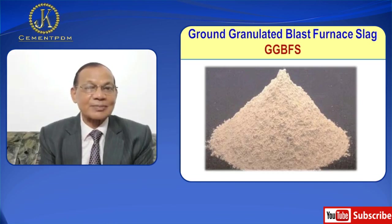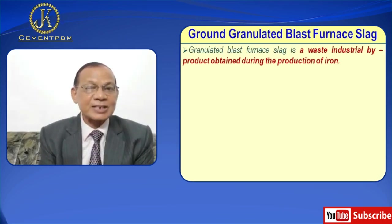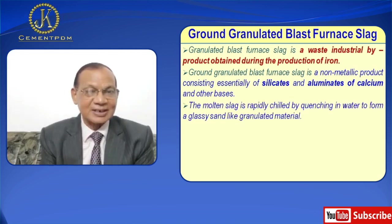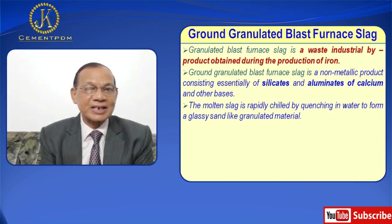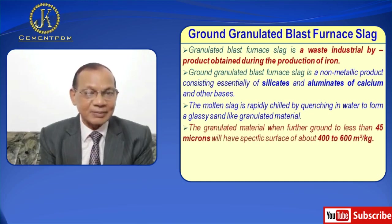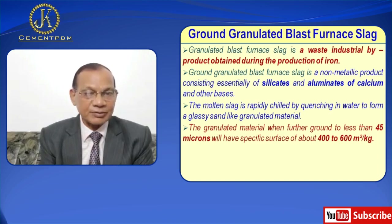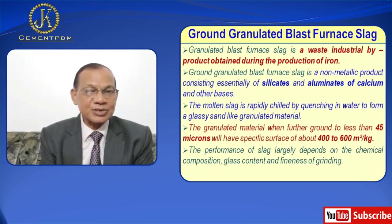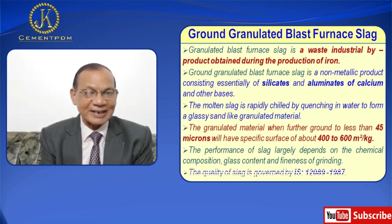Ground granulated blast furnace slag is a waste industrial by-product obtained during the production of iron. It is a non-metallic product consisting essentially of silicates and aluminates of calcium and other bases. The molten slag is rapidly chilled by quenching in water to form a glassy, sand-like granulated material. The granulated material, when further ground to less than 45 microns, will have a surface area of about 400 to 600 square meters per kg. The performance of slag largely depends on the chemical composition, glass content, and fineness of the slag. The quality of slag is governed by IS 12089.